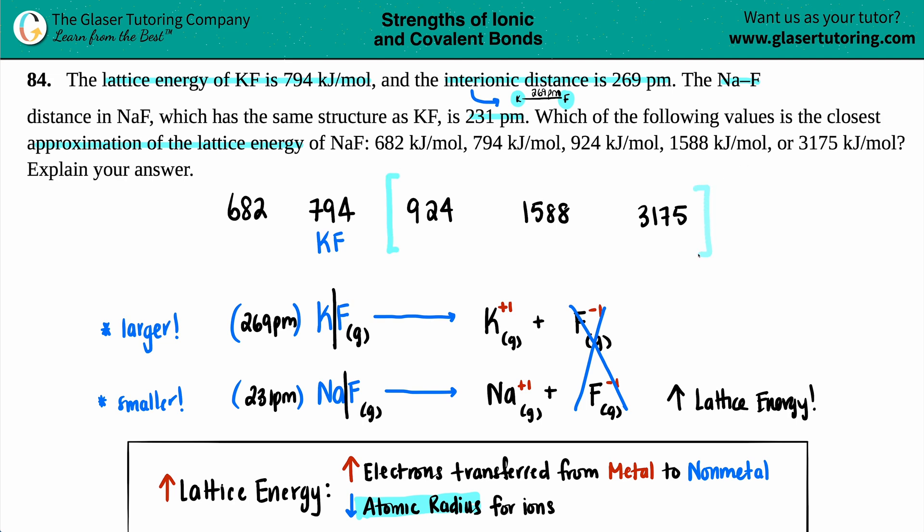So we know now that it's got to be either 924, 1588, or 3075. So we know that it's not going to be 682. But now which one out of these three is it?